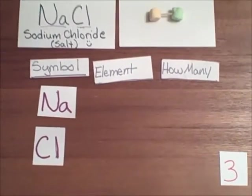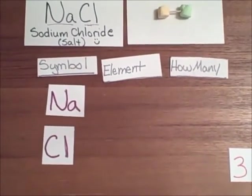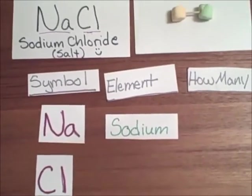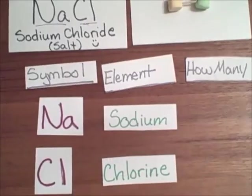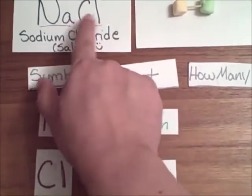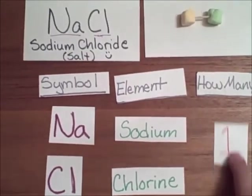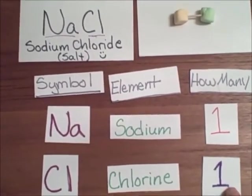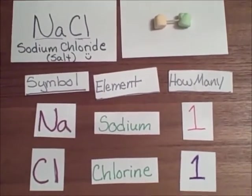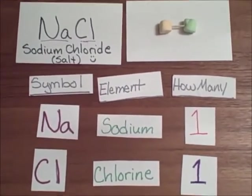So did you figure it out? Na stands for sodium. Cl stands for chlorine. And we don't have any numbers next to either of them. So that tells me I only have one. So I have one sodium and one chlorine. And that matches up with our model of sodium chloride.